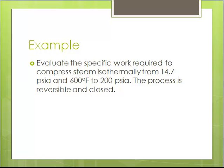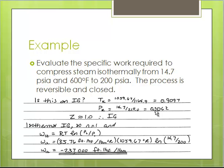Let's look at an example. If we want to find the specific work required for compressing steam isothermally from 14.7 psi, 600°F to 200 psi, and we're going to assume it's reversible in a closed process, first I establish if this is an ideal gas.